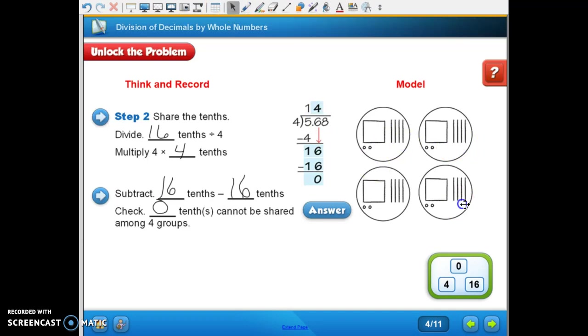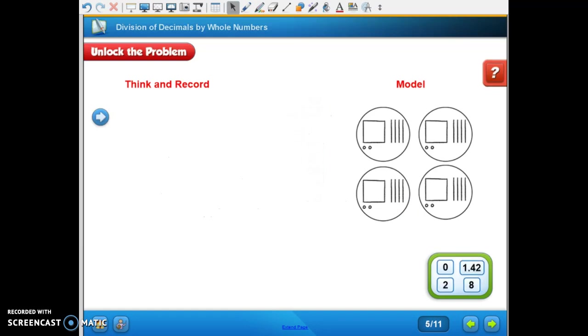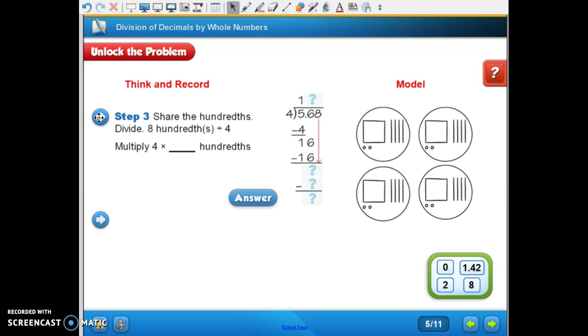So here in the diagram, we've shared our tenths, four in each of the four circles. So what are we going to do next? We're going to divide our hundredths.